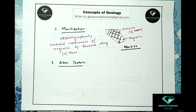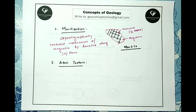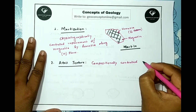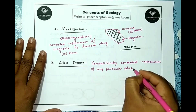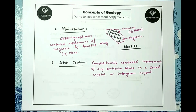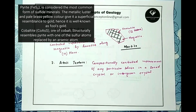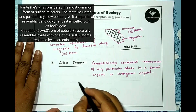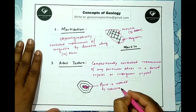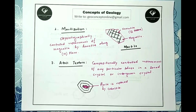The second example of replacement texture is the euhedral texture. This is a compositionally controlled replacement. In a zoned crystal or intergrown crystal, a particular phase is replaced by another phase while the other phases remain unchanged. For example, in a zoned crystal the core composed of pyrite may be replaced by cobaltite.